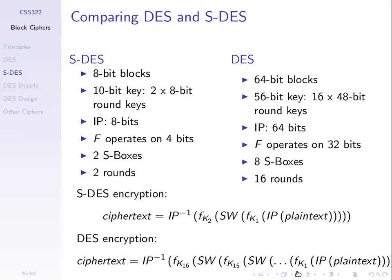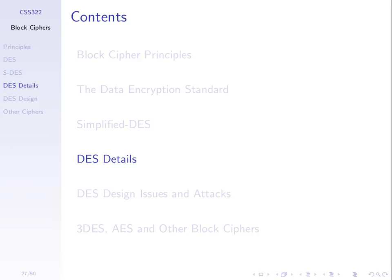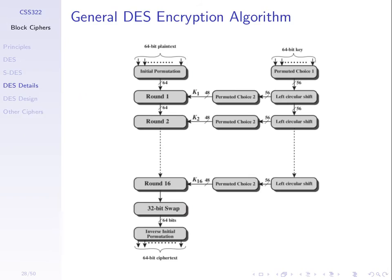The encryption algorithm looks basically the same as simplified DES but extended: take the plaintext, initial permutation, apply our function with K1, swap, apply with K2, swap, and keep repeating — do that 16 times — then the inverse initial permutation. These details are listed in the next few slides from the textbook, showing the design of real DES with IP, rounds 1 through 16, and then the inverse. Key generation uses left shifts and permutations.